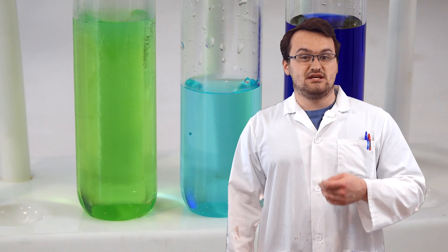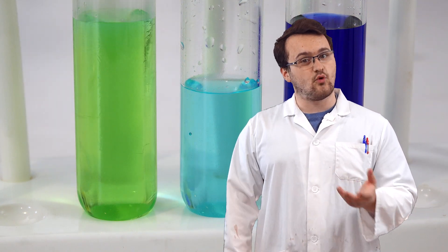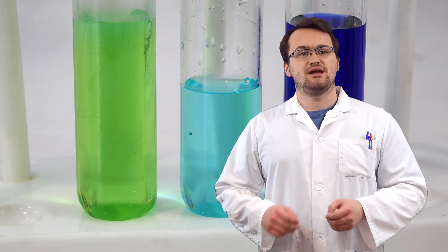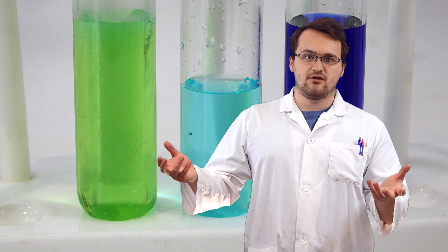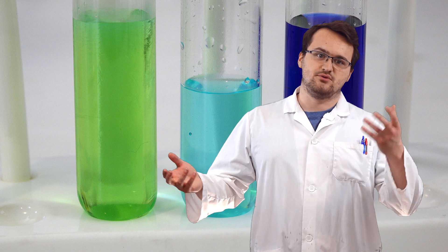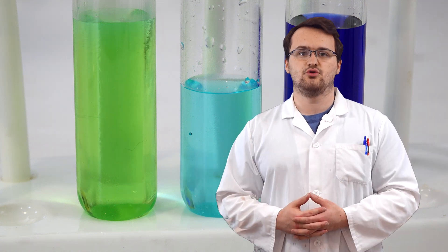The reason why we see green is that the compound doesn't form quite as strongly. And so we get a mixture of the blue compound with the six waters and the compound with the four chlorides. So yellow and blue mixed together to show green.